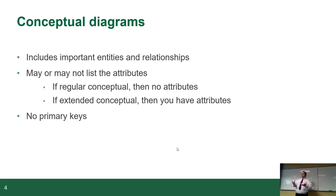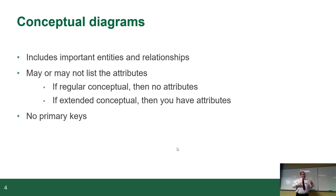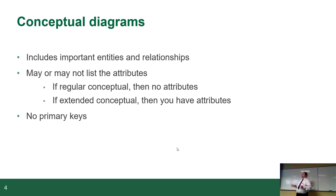A conceptual diagram includes all the important entities and relationships. It's essentially a bare-bones diagram — it may or may not list attributes. If it's a regular conceptual diagram, there are no attributes. If it's an extended conceptual, it includes attributes. There are never any primary keys defined unless you're talking about extended, and even then it's iffy.